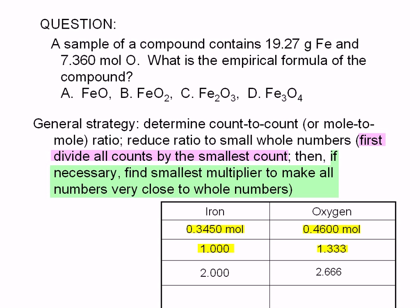So let's try multiplying the numbers by 3. 1.000 times 3 equals 3.000, and 1.333 times 3 equals 3.999. Now we have two numbers that are very close to whole numbers. 3.999 is essentially equal to 4. Therefore, the iron-to-oxygen ratio is 3 to 4.